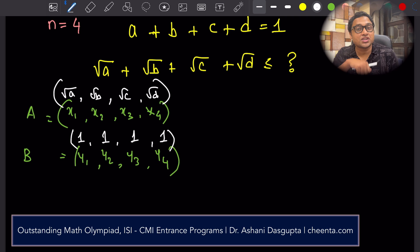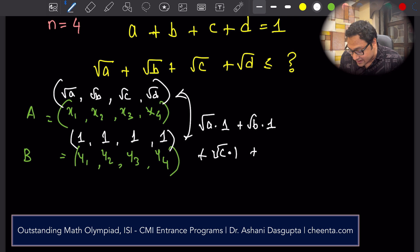Now, if I use Cauchy-Schwartz inequality here, what I'm going to get is, on the left-hand side, I'll get the dot product of them, which is square root of a times 1, square root of b times 1, square root of c times 1, square root of d times 1. This is less than or equal to product of the magnitude.